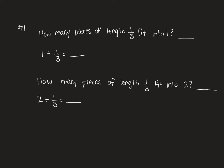Question 1 asks you to answer the questions and complete the division statements. So they might ask you how many pieces of a length 1 third fit into 1. So if we had 1 meter, we cut it into pieces that were 1 third, there would be 3 pieces. Therefore, 1 divided by 1 third is 3.